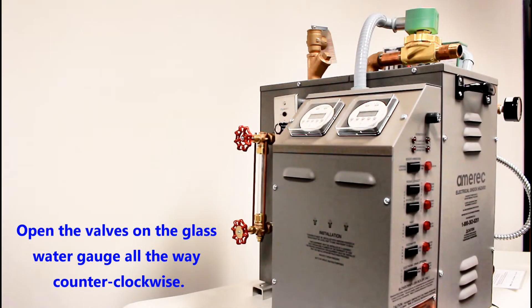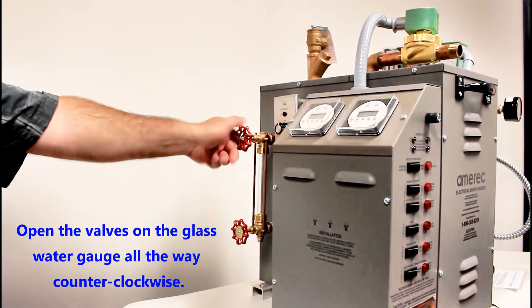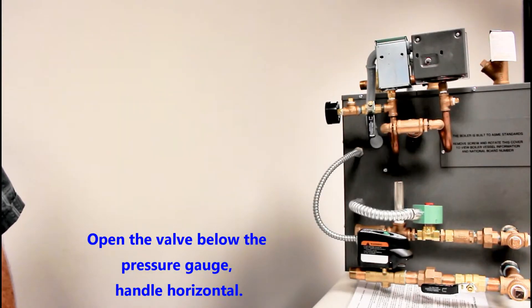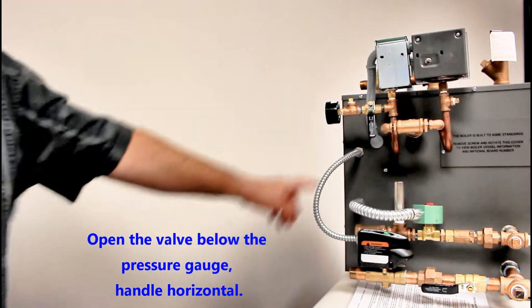Open the valves on the glass water gauge all the way, counter-clockwise. Open the valve below the pressure gauge, handle horizontal.